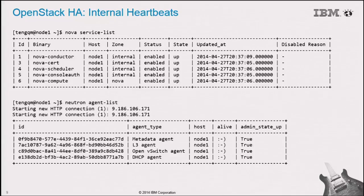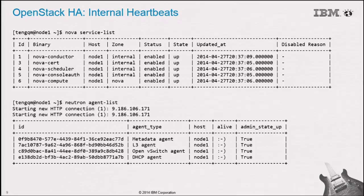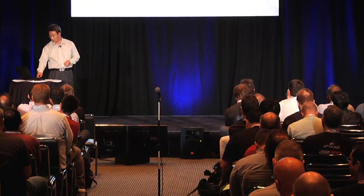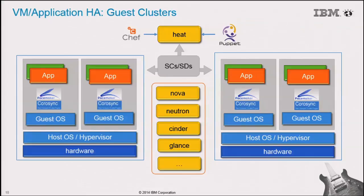Here I'm showing how you can get service status from OpenStack today. The upper table shows services from Nova — when they were updated and their status. From Neutron we can get an almost similar status. But this is all about OpenStack service availability per se. Next I'd like to talk a little bit about VM and application-layer high availability.